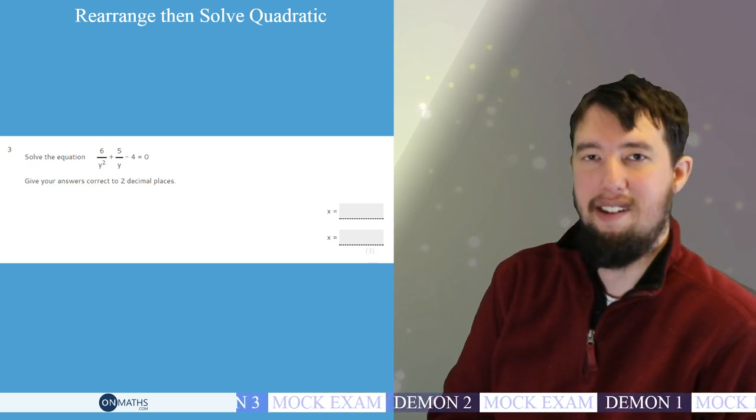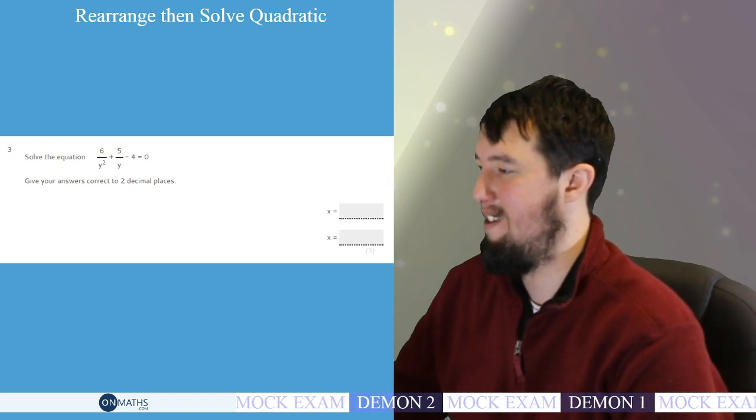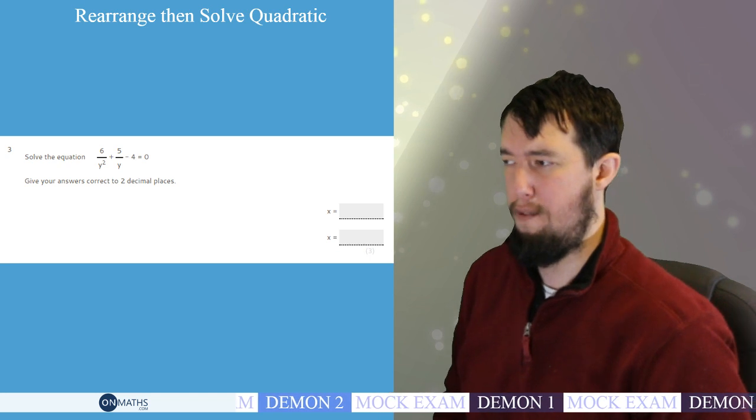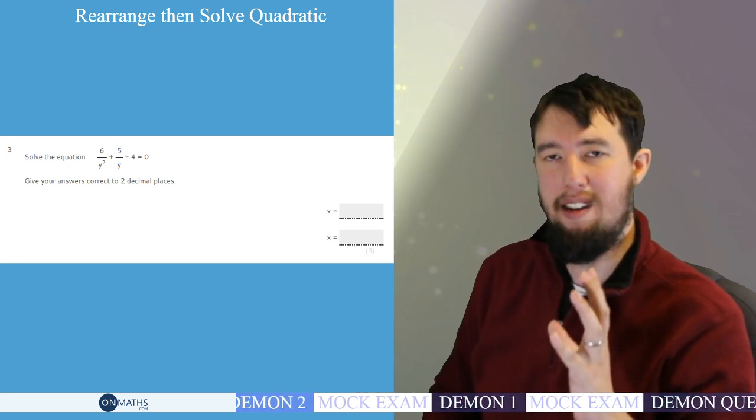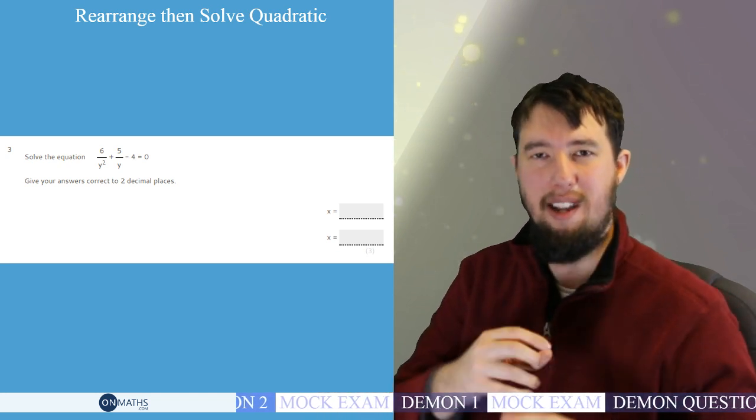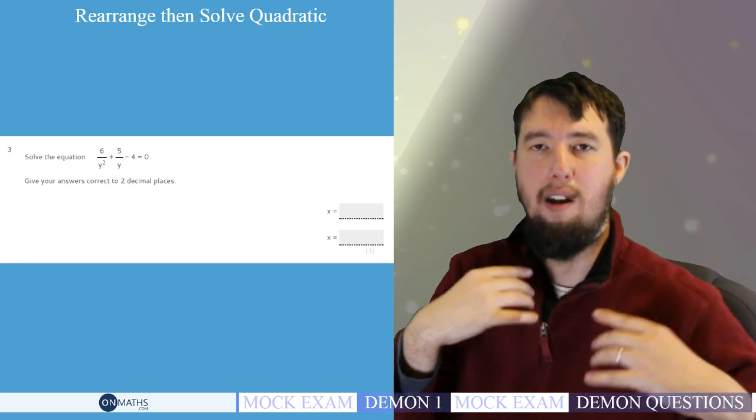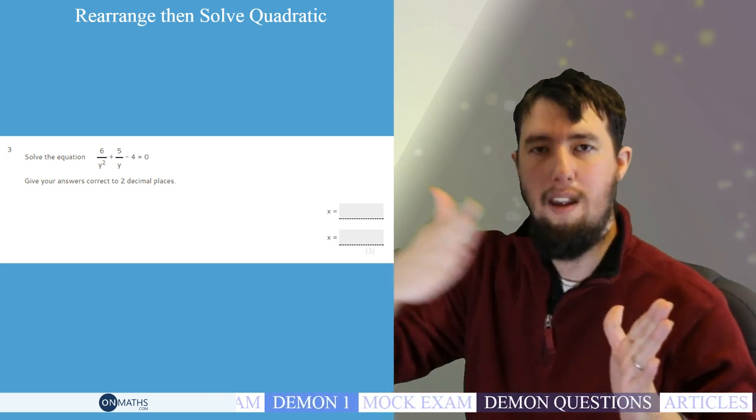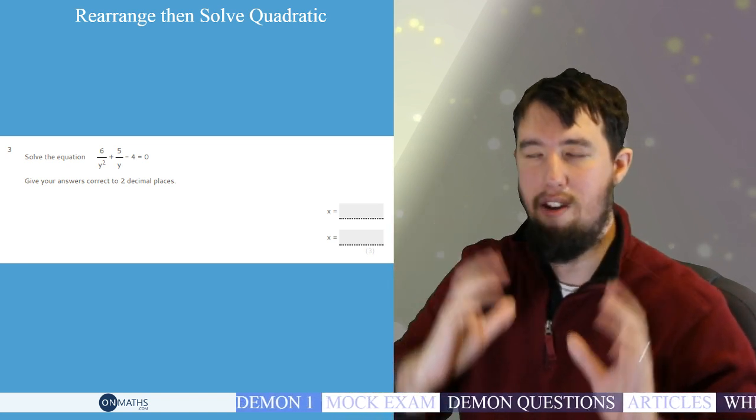That is it for that question. Thankfully. So, nice, easy, A stroke A star grade question. To finish off. As long as you knew you had to slightly rearrange the equation. You had to times each of the terms by Y squared to make it into a nice Y squared, Y, number, equals zero. And then you could solve it.